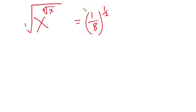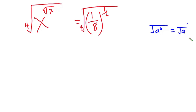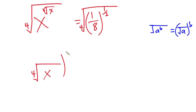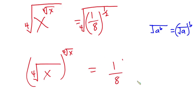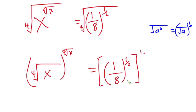Now let's take the fourth root on both sides of the equation. Just like we did earlier, if you have (square root of a) to the power b, this is the same as the square root of a, to the power b. From the left side, I can write it as the fourth root of x, to the power of the fourth root of x. And on the right side, I can write this as 1 over 8 to the power one half, then to the power one over 4.